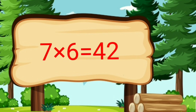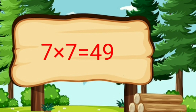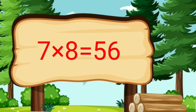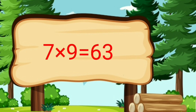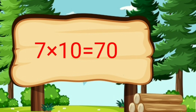7 sixes are 42. 7 sevens are 49. 7 eights are 56. 7 nines are 63. 7 tens are 70.